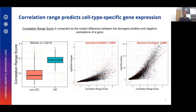We wondered if we could use this information, and thus constructed a correlation-grain score, which is basically the scaled difference between the strongest positive and negative correlations of a gene. Indeed, we found that DE genes, or cell-type-specific genes, have a significantly higher correlation-grain score compared to non-DE genes, and the score is also predictive of fold change and Q-value of differential expression.